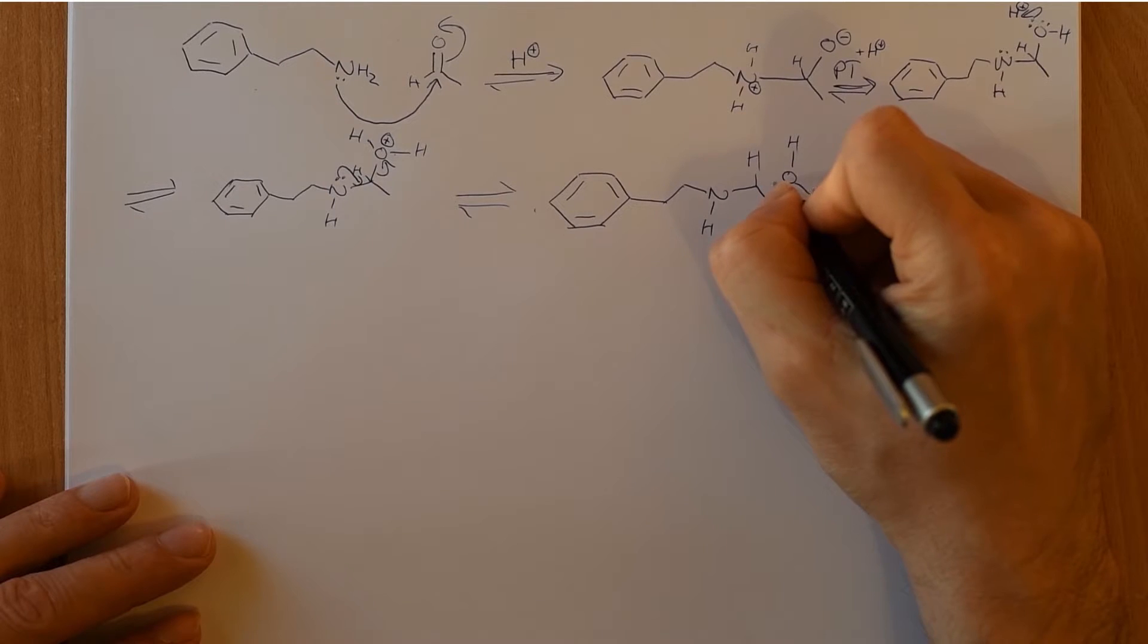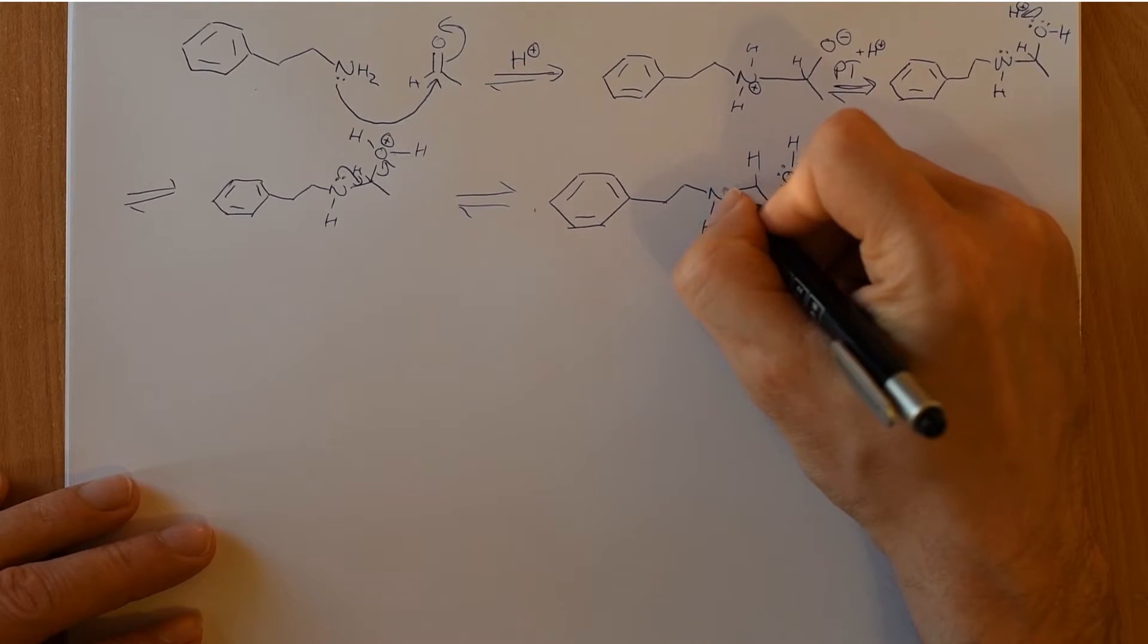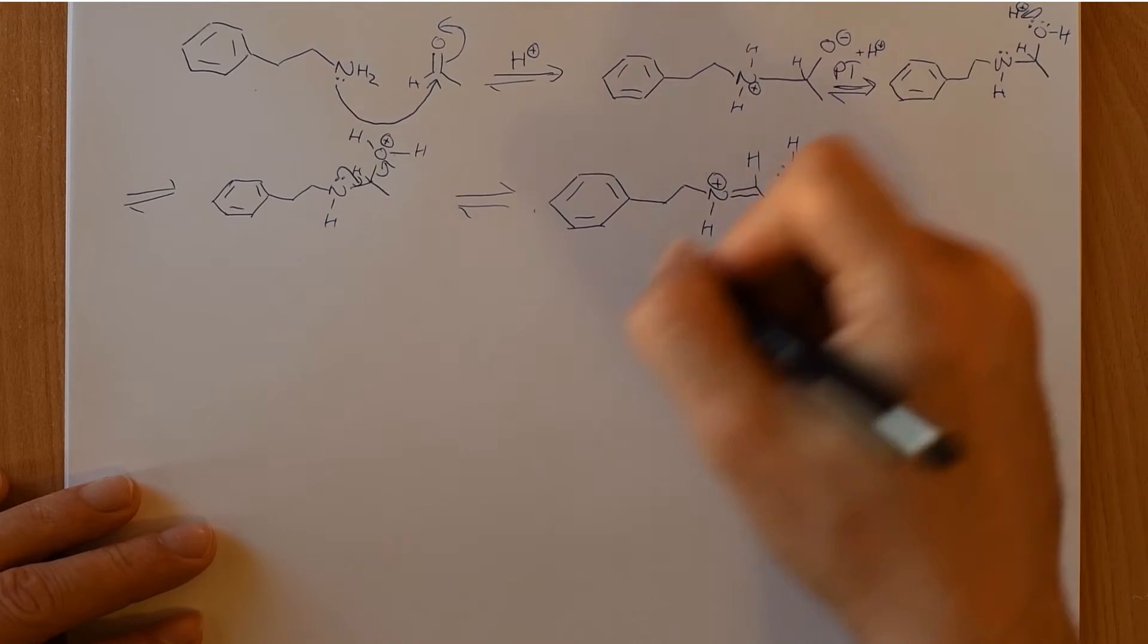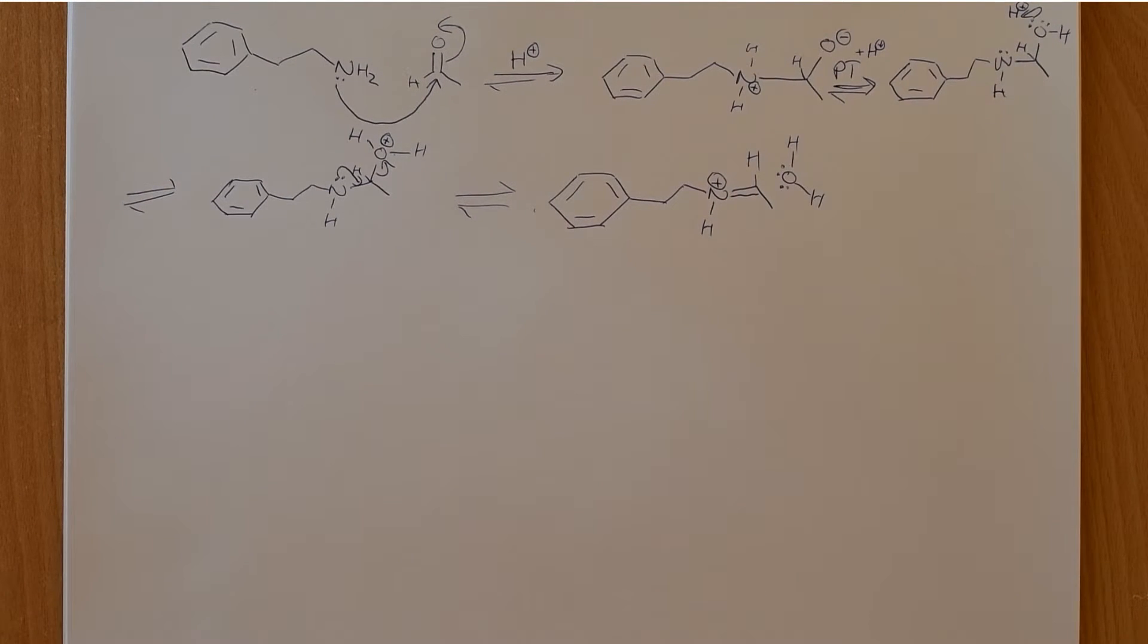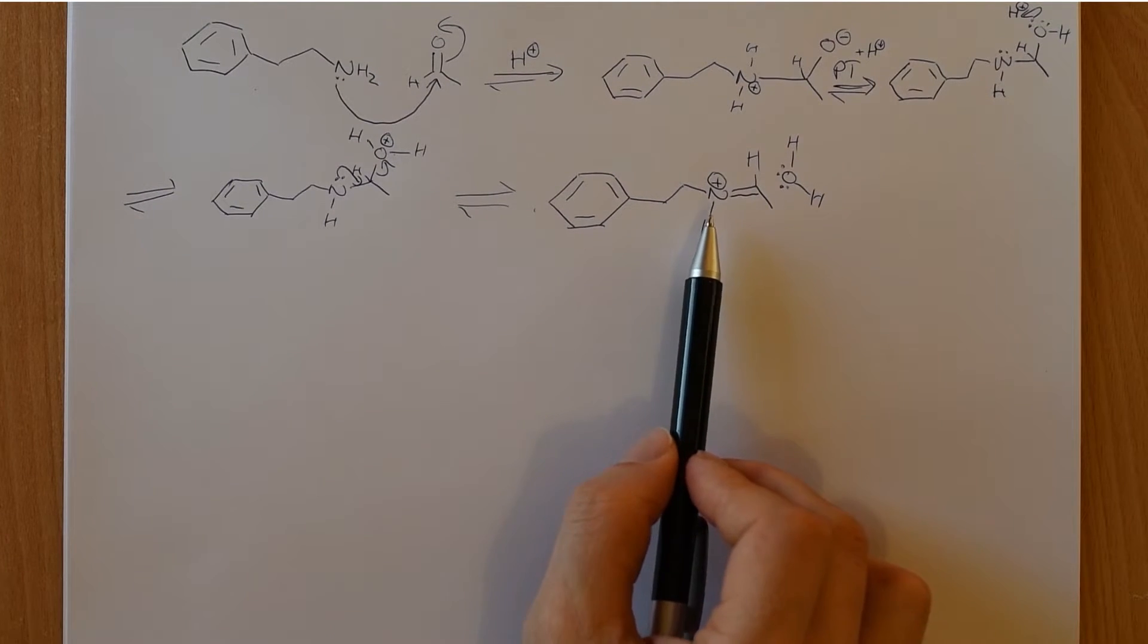And we took this pair of electrons, gave it back to the oxygen, so it's no longer positively charged. And we took the pair of electrons that was on the nitrogen, and we made a new carbon nitrogen double bond. So now we have our iminium.